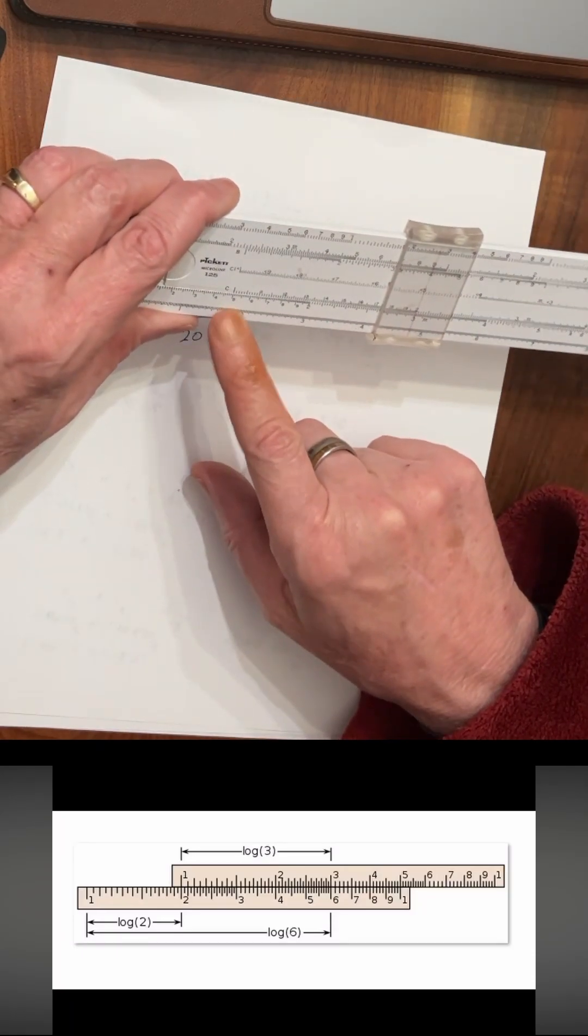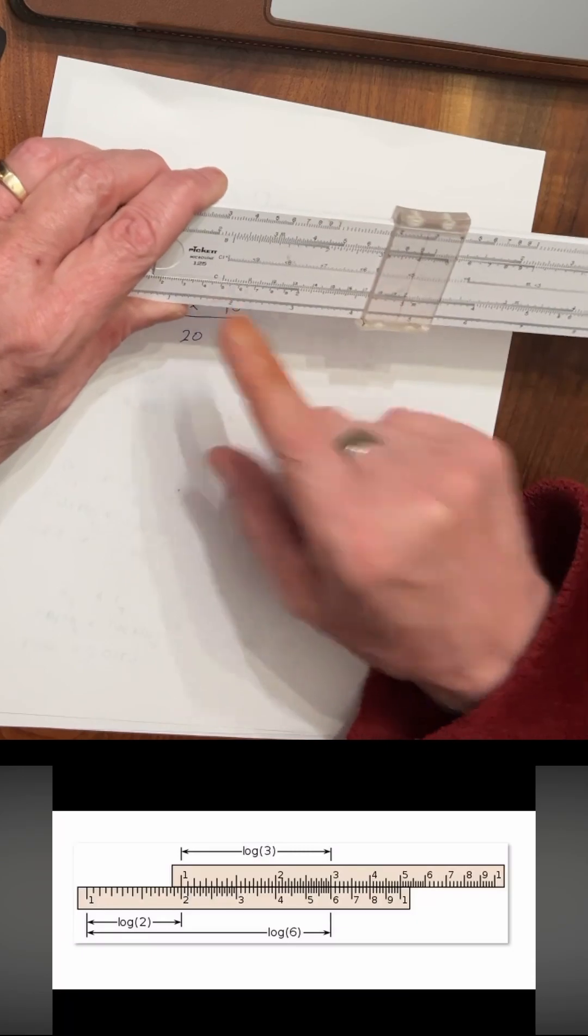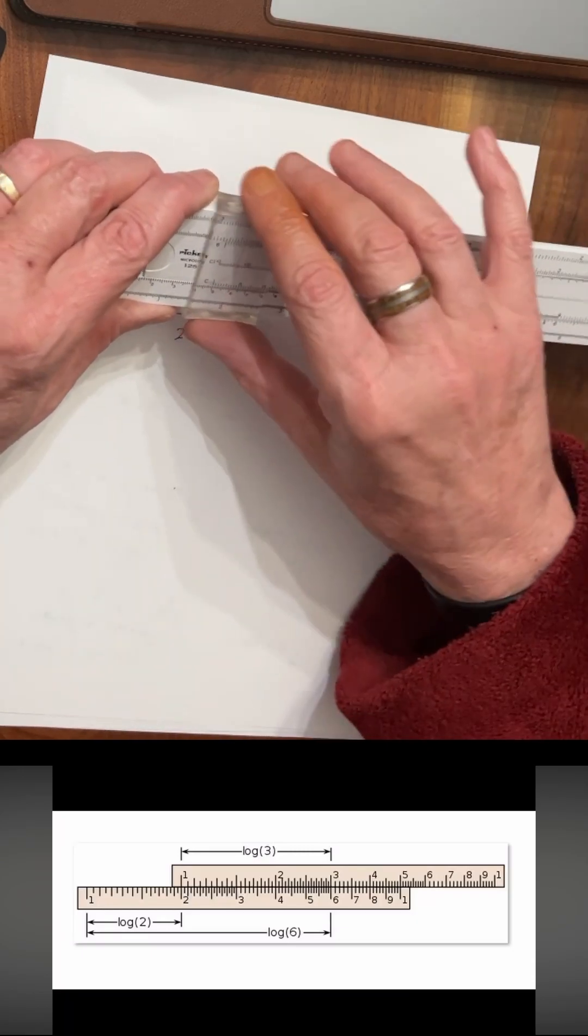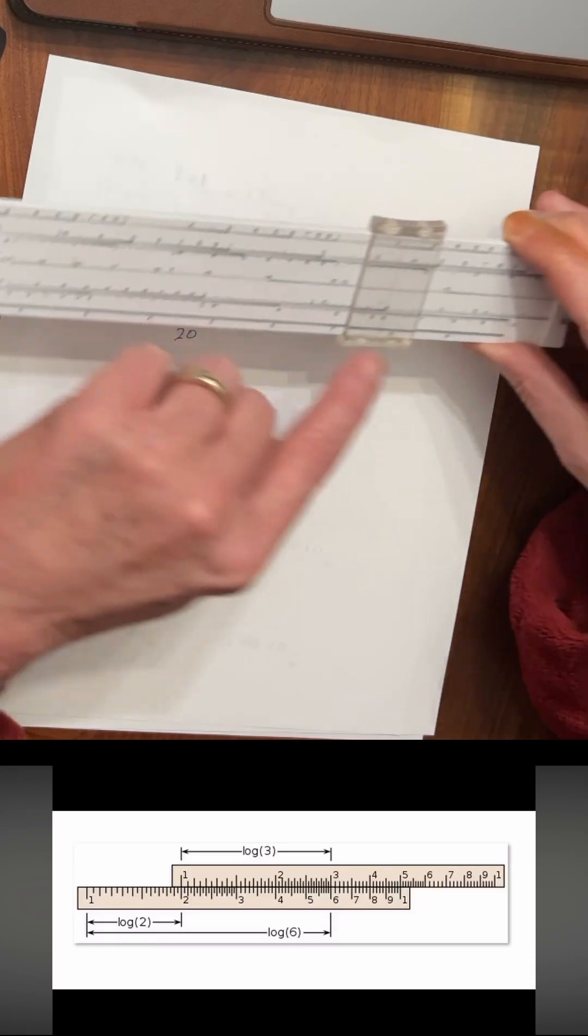Then you have an intermediate result out here. You don't need to go here. You can just go straight to your next operation, which is multiplying that number by 4.